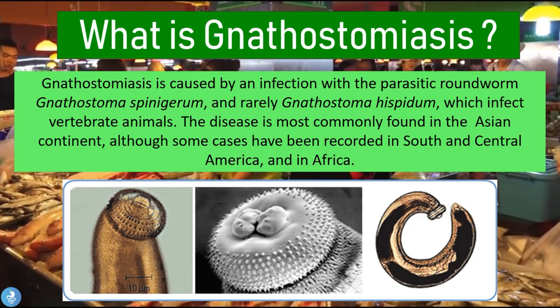So what is nastostomiasis? Nastostomiasis is caused by an infection with the parasitic roundworm called nastostoma spinagerum, and rarely nastostoma hispidum, which infect vertebrate animals. The disease is most commonly found in the Asian continent, although some cases have been recorded in South and Central America and in Africa.